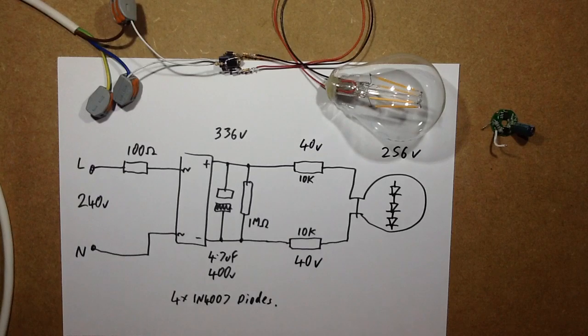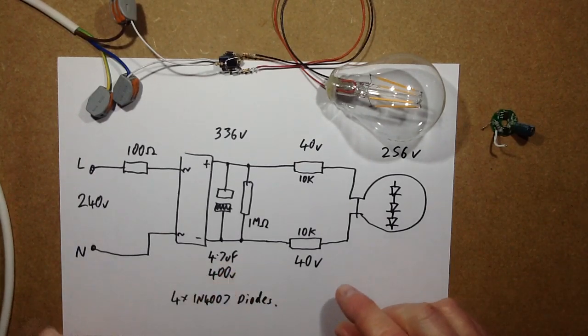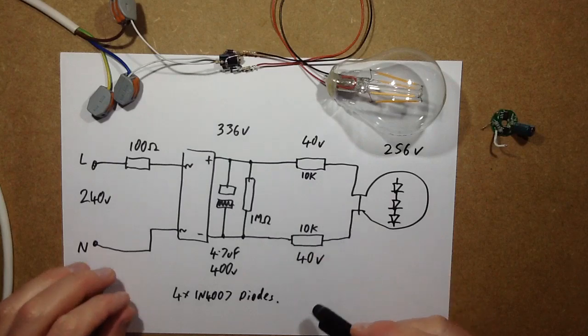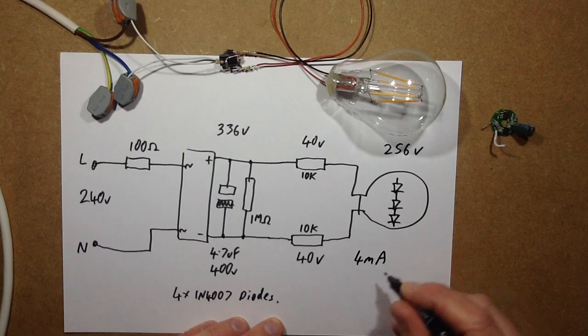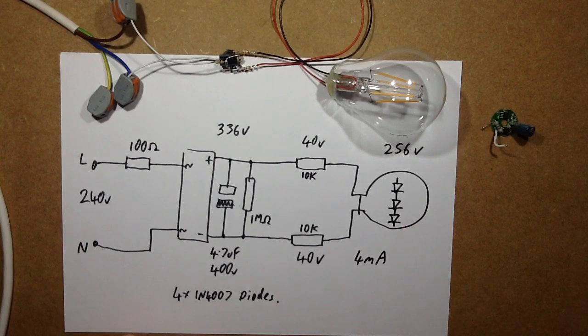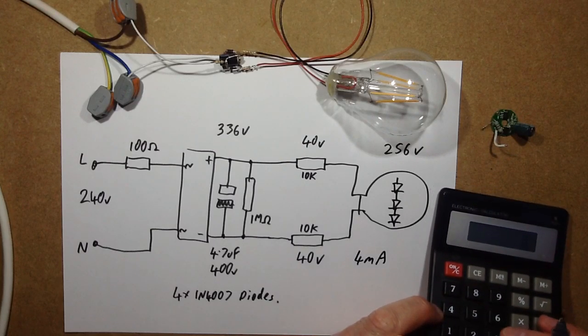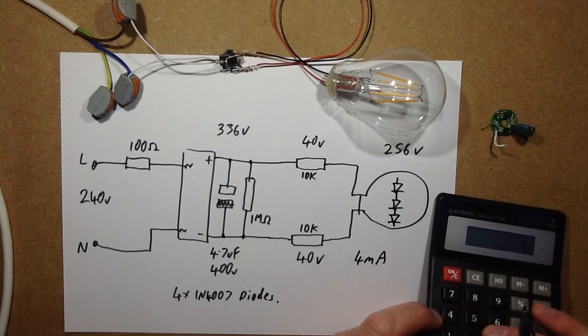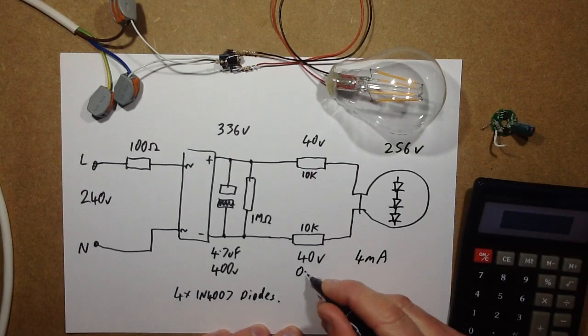And that means the current flowing in this side of the circuit is, well it's quite handy that it's 10kΩ. I equals V over R, so that's 40 divided by 10,000, that comes out a nice 4mA. So 4mA in this state, and that means the dissipation of the resistors will be 0.004, 4mA times the voltage across them which is 40 volts, equals 0.16 watts.